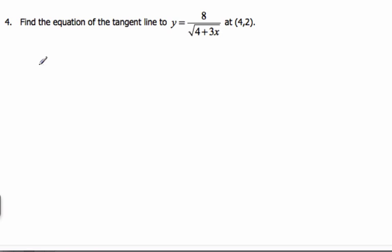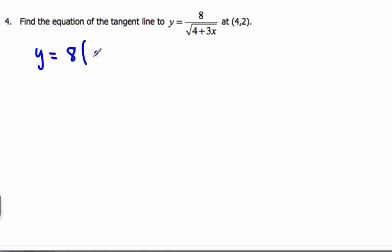If I rewrite this equation, I can see that it's 8 times (4 plus 3x) to the negative 1 half, because the square root is the 1 half, and the negative pulls it to the top.